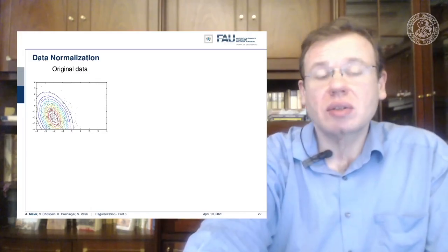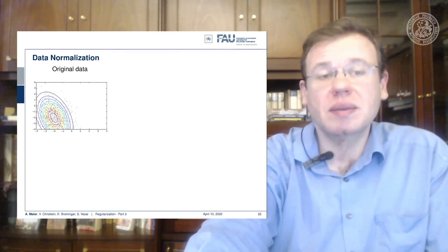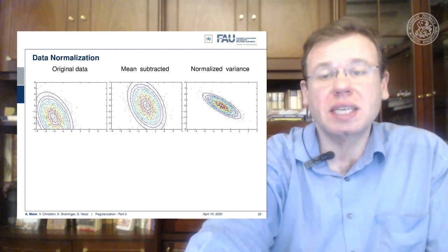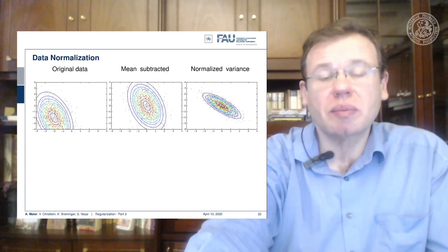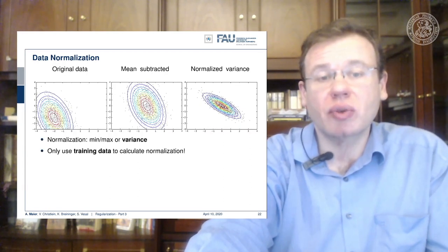The stuff that works best is really simple. So why could normalization be a problem? A typical approach is that you subtract the mean and then you can also normalize the variance. And this is very useful because then we are in an expected range regarding the input.